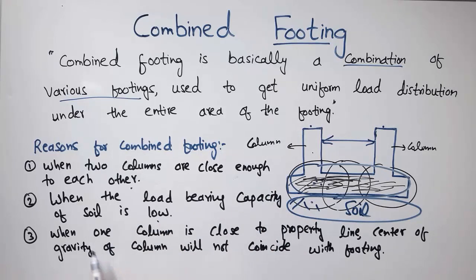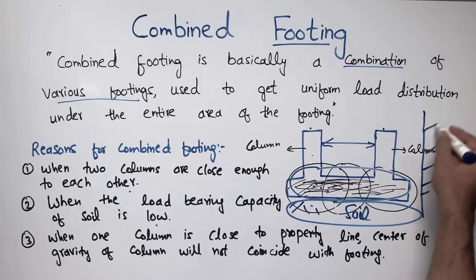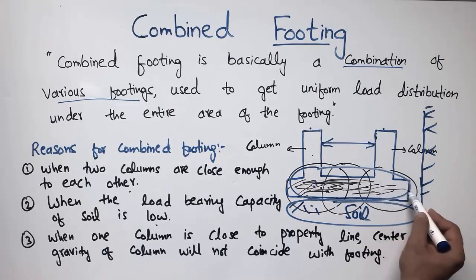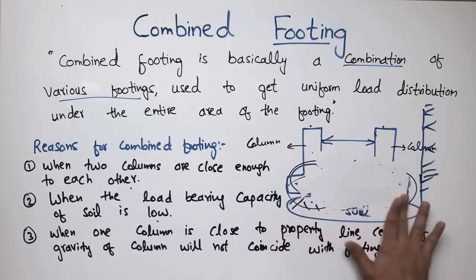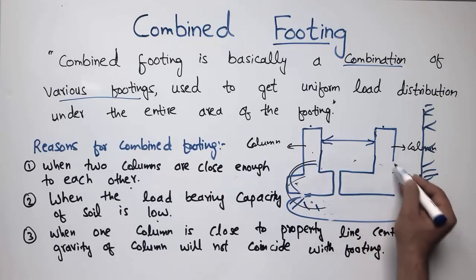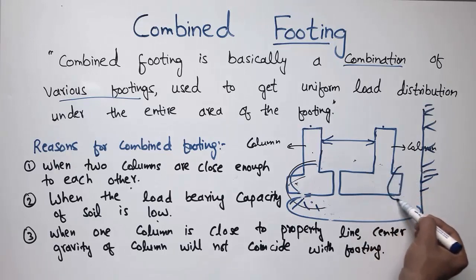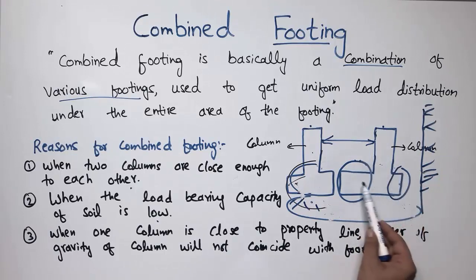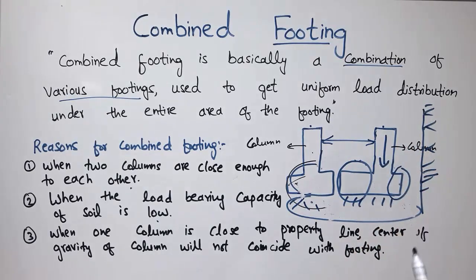The third and most important reason is when one column is close to the property line. In that case, the center of gravity of the column will not coincide with the footing. For example, if the footing of a column is restricted due to an adjacent property boundary, one side of the footing will be smaller than the other. The load will not be distributed uniformly to the soil below. So we combine the footings to achieve a uniform load distribution.